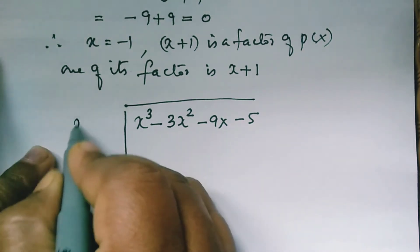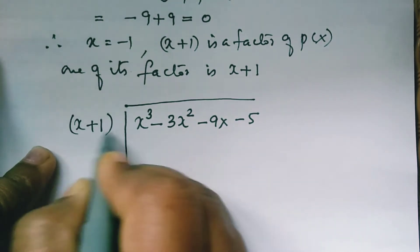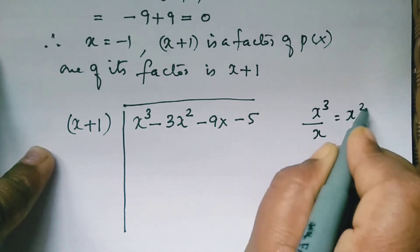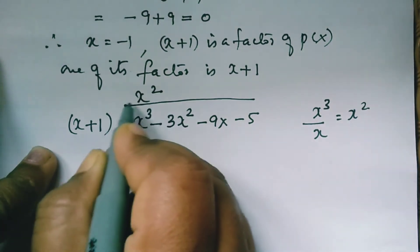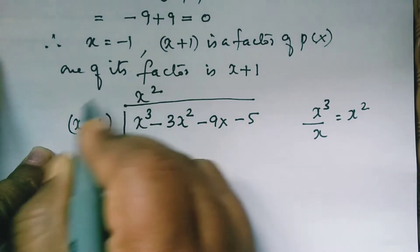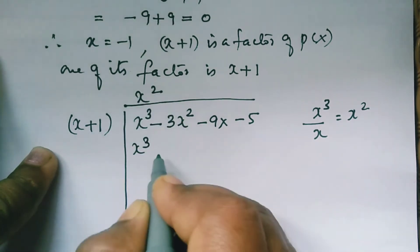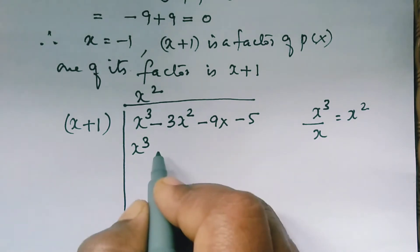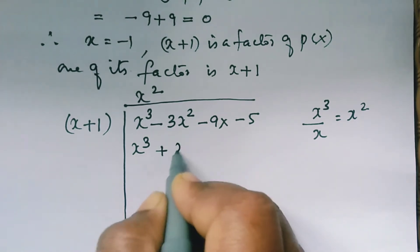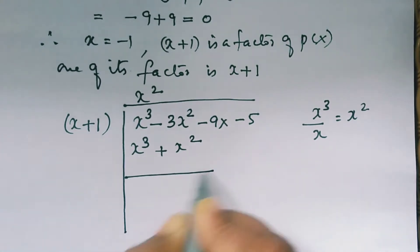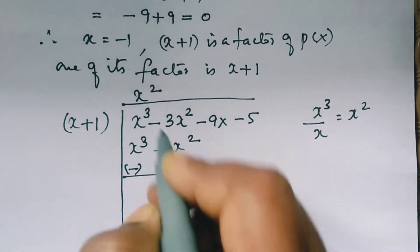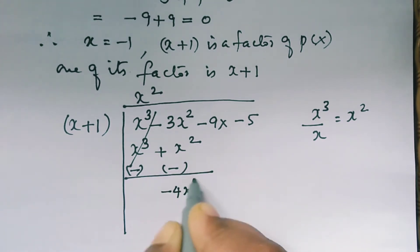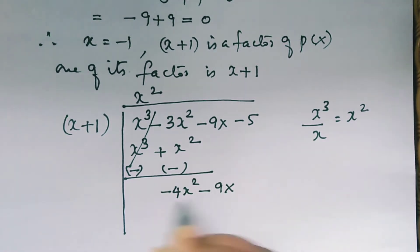Divide the first term of the dividend by the first term of the divisor, and you get x square. Now multiply x square with the divisor: x square times x gives x cube, and x square times 1 gives x square. Now change the sign, so the first term gets eliminated, and you are left with minus 3x square minus x square, which equals minus 4x square.